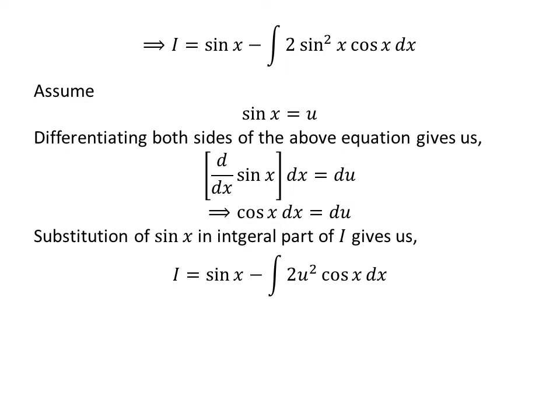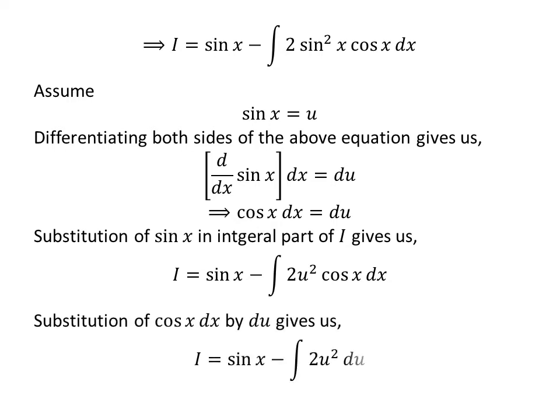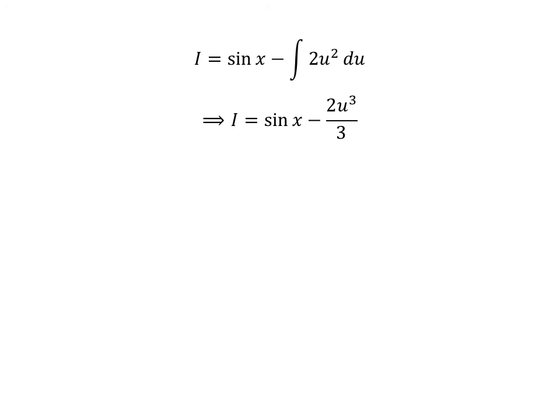Substituting sine of x by u, I is equal to sine of x minus the integral of 2u squared times cosine of x with respect to x. Now, replacing cosine of x times dx by du, I is equal to sine of x minus the integral of 2u squared with respect to u. Since the integral of u squared is u cubed over 3, I is equal to sine of x minus 2 times u cubed over 3.